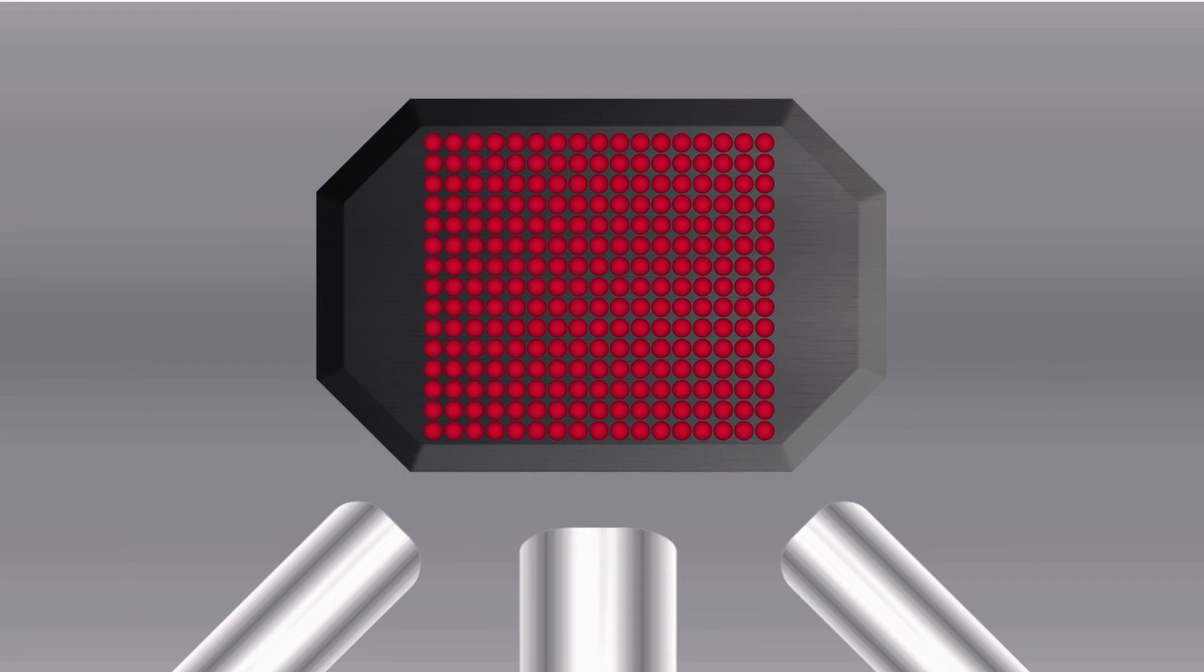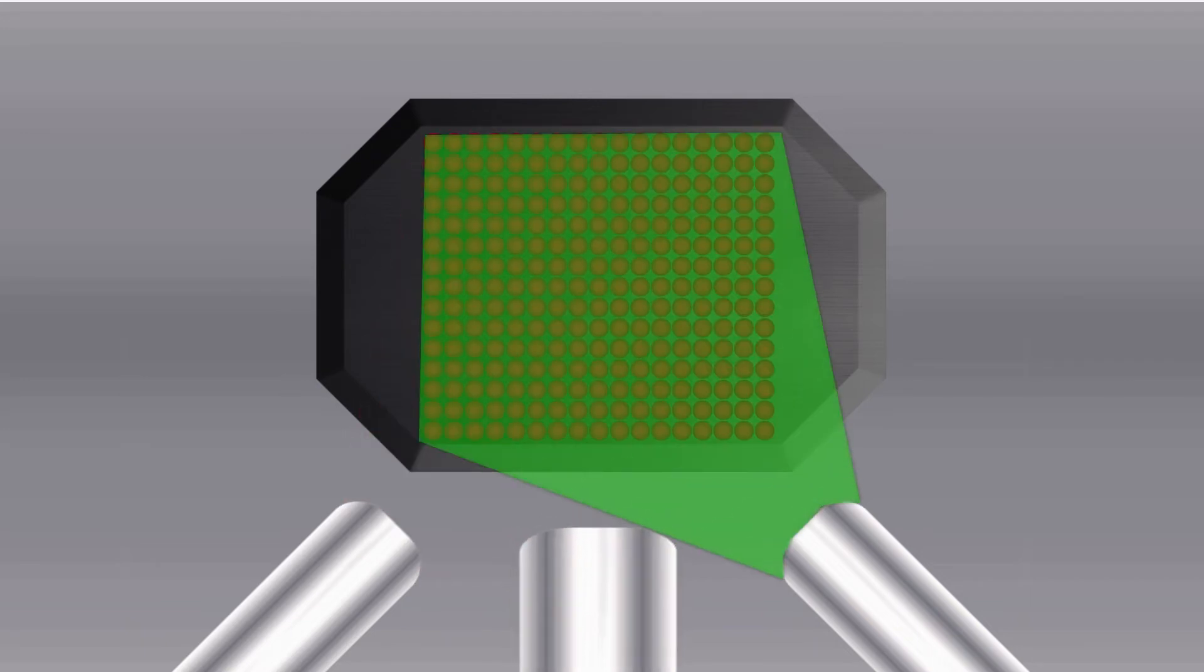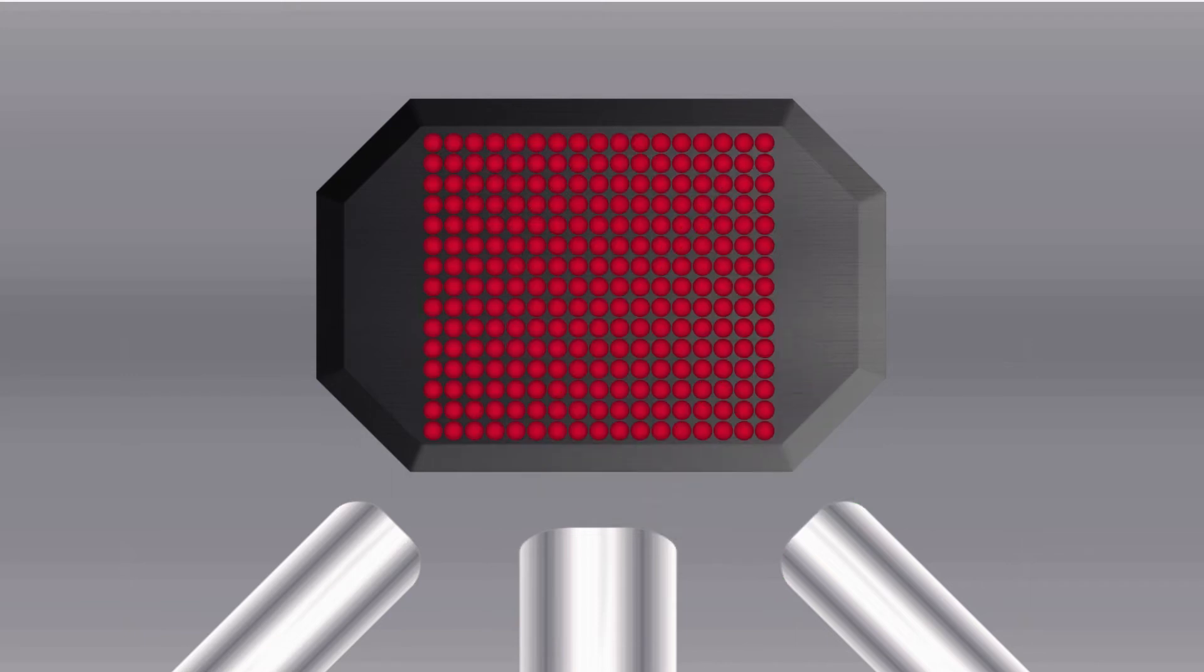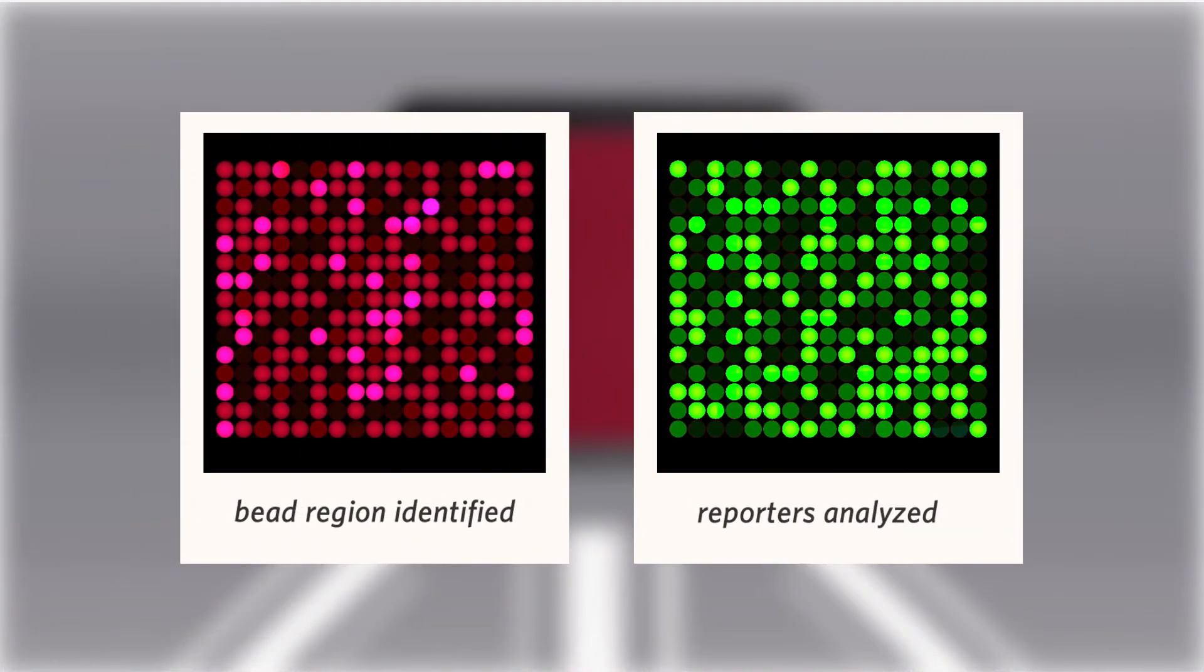Once the beads are in place, a red 635 nm and a green 525 nm LED shine on the beads to excite the dyes and reporter. Then, a CCD camera is used to identify each bead region as well as quantify the analyte binding events.